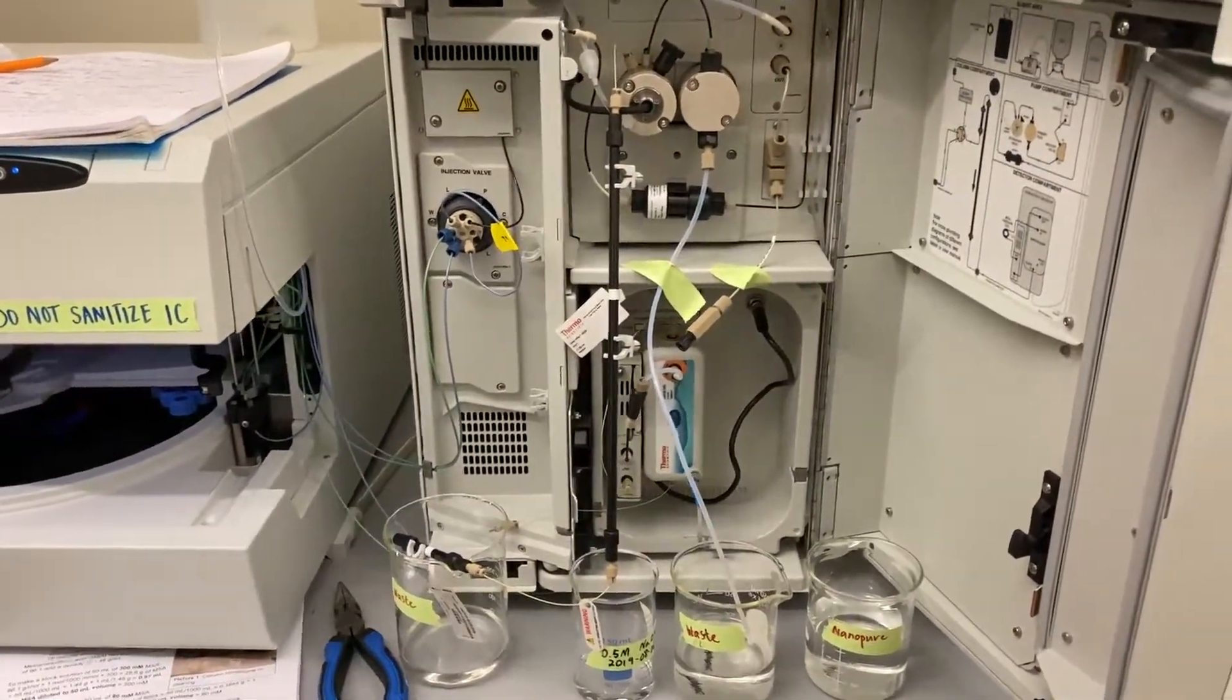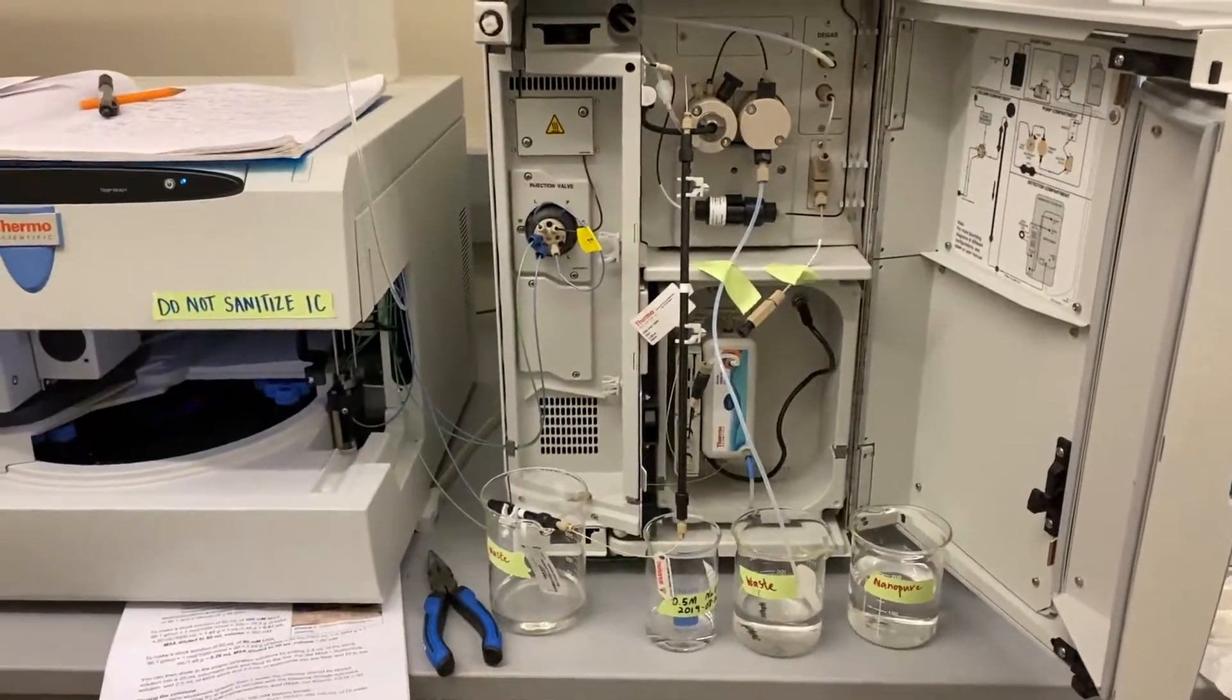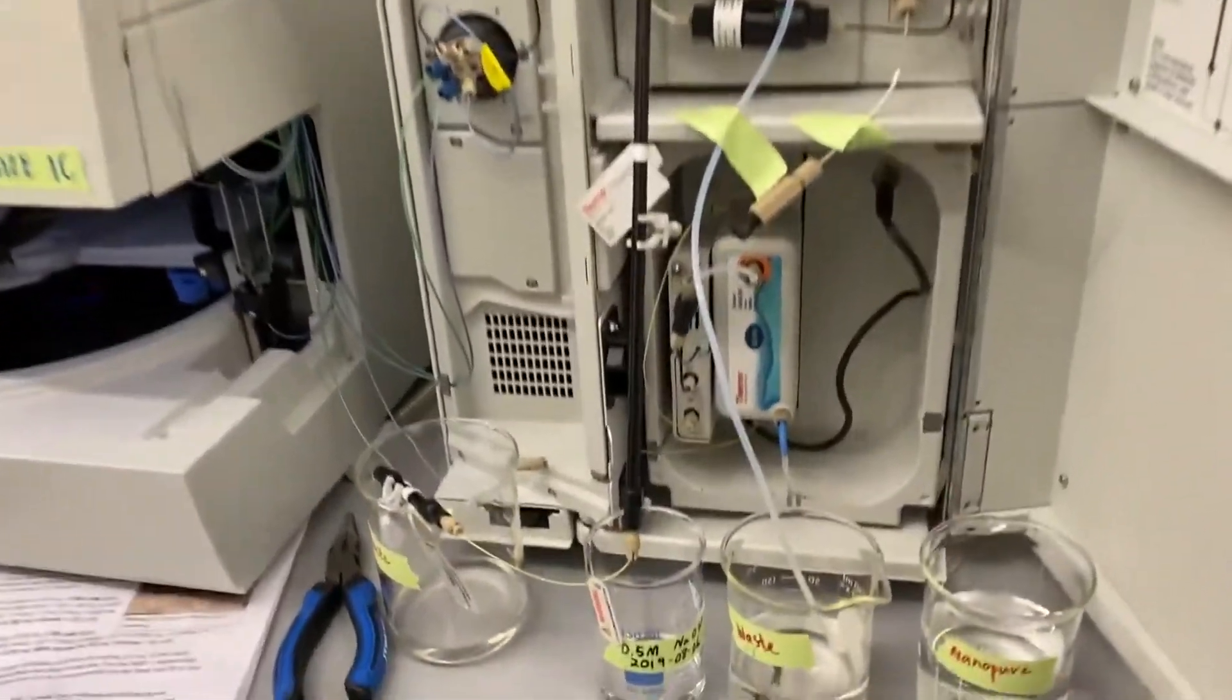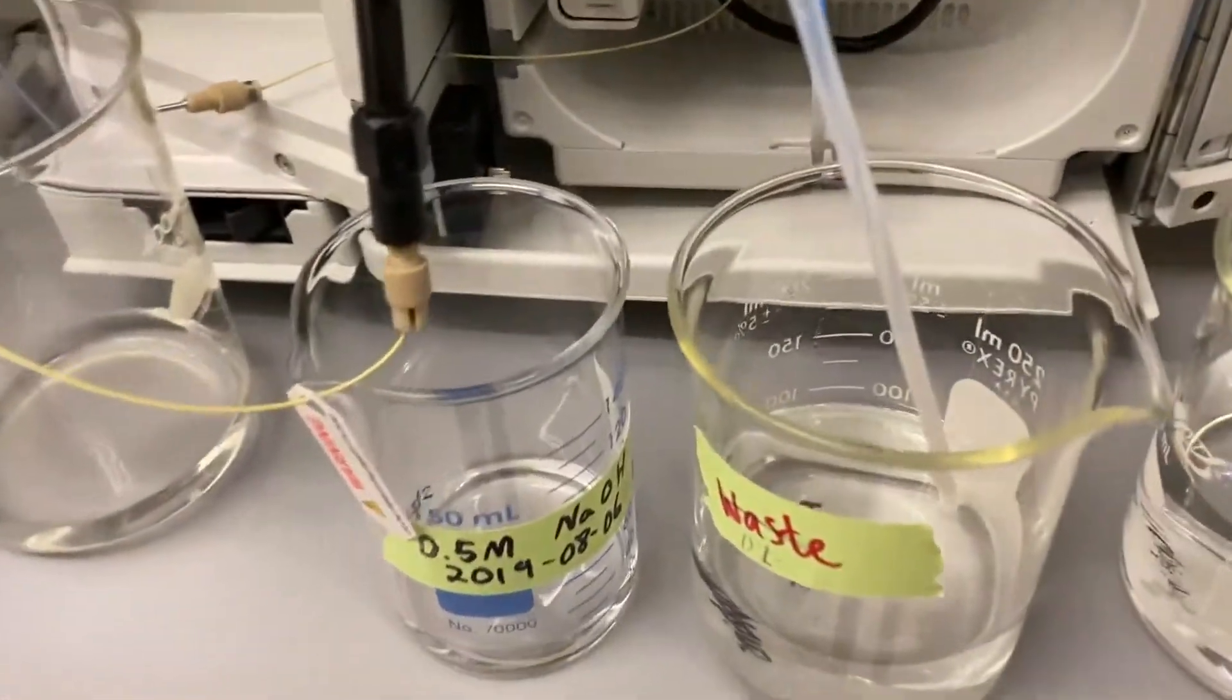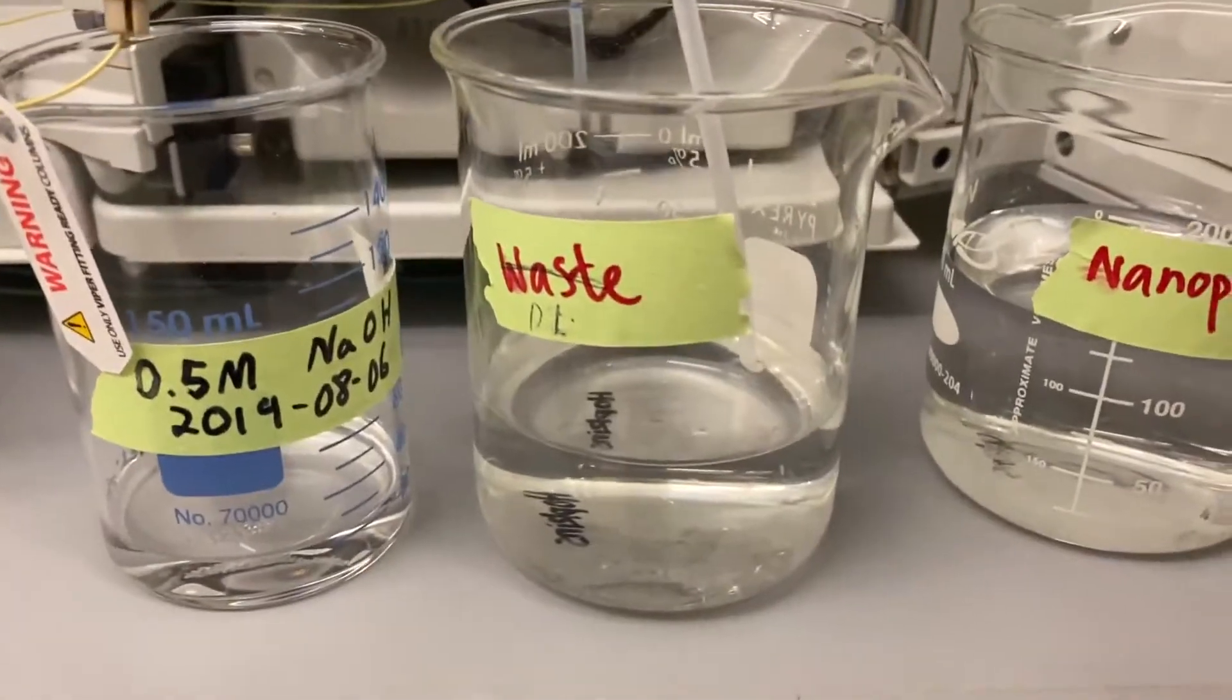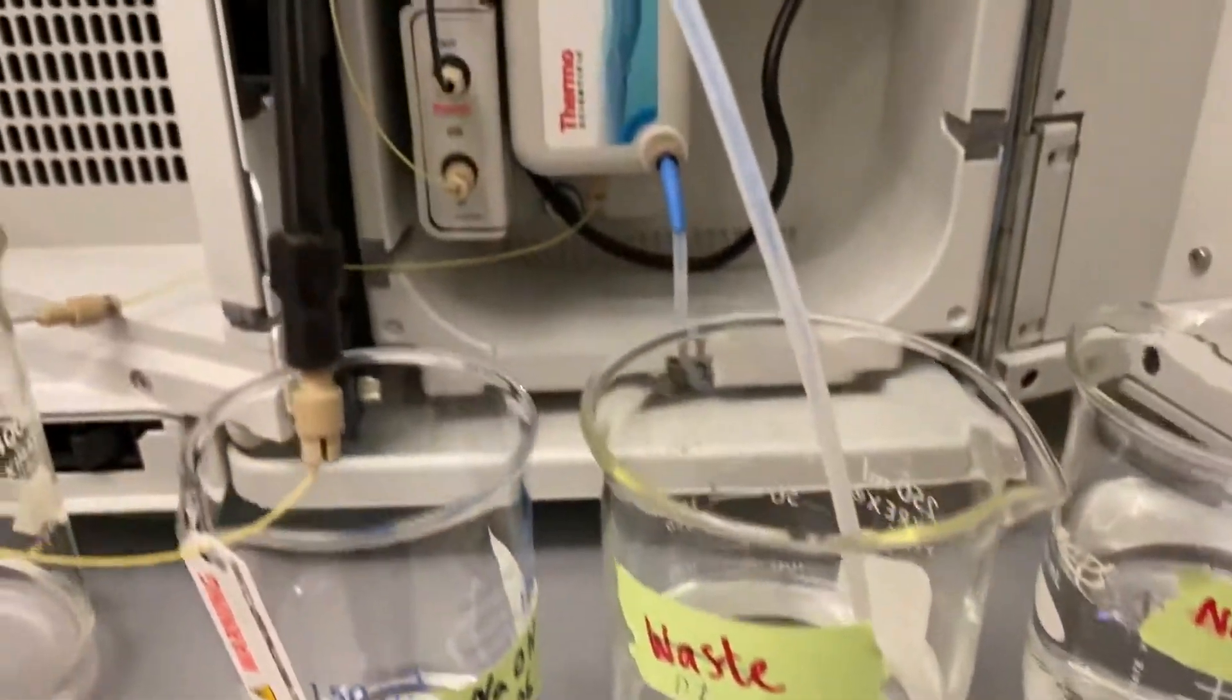So this is the IC set up in a column cleaning or reconditioning procedure. Here's the line that is drawing in. In this case, it's not waste, it's DI. Sorry for the bad labeling.